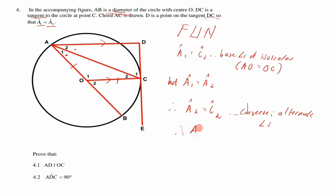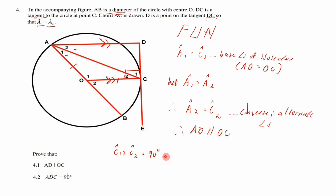For 4.2, prove that angle ADC = 90°. From 4.1, AD is parallel to OC. DC is a tangent and OC is a radius. By the theorem that the tangent is perpendicular to the radius at the point of contact, C1 + C2 = 90°.